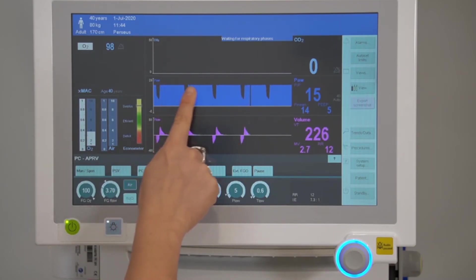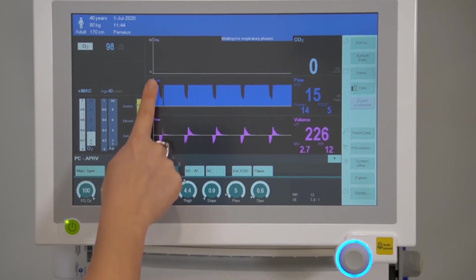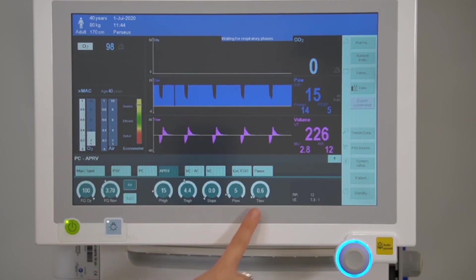The upper pressure level can be set as P high and maintained for a duration of T high. The pressure releases are time controlled and can be set by T low. To support carbon dioxide elimination, the pressure is reduced for the brief period T low at P low.